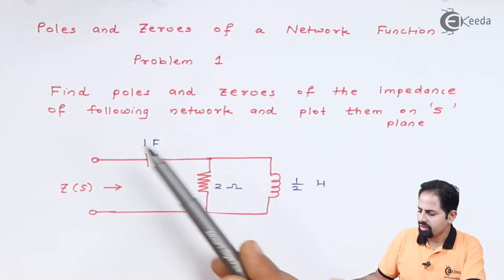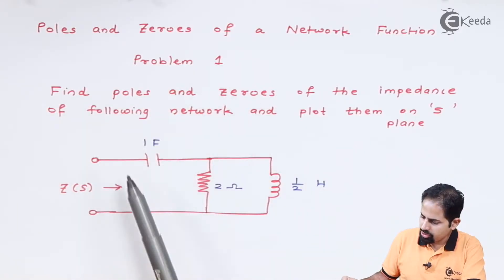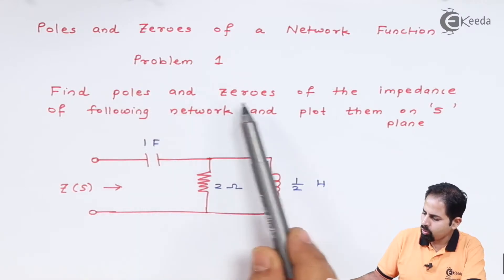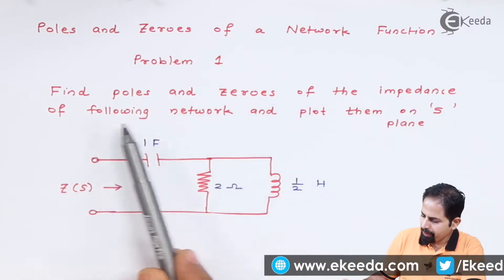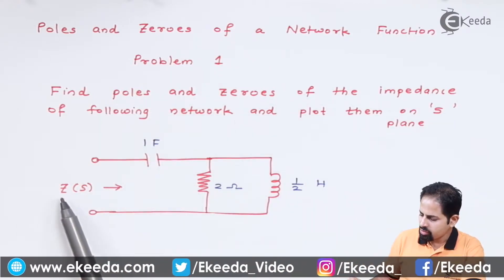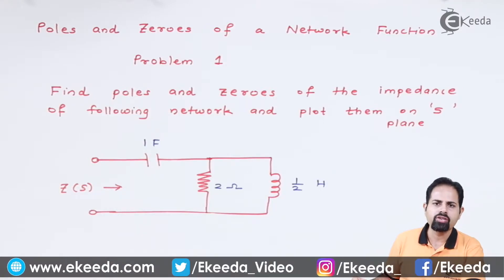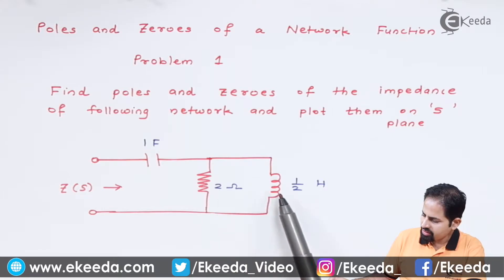Here you can see problem number one, which is asking us to find poles and zeroes of the impedance of the following network. So impedance is Z, that is already in S domain.